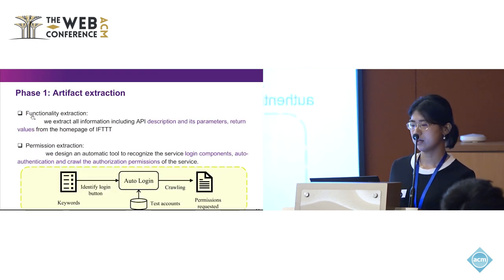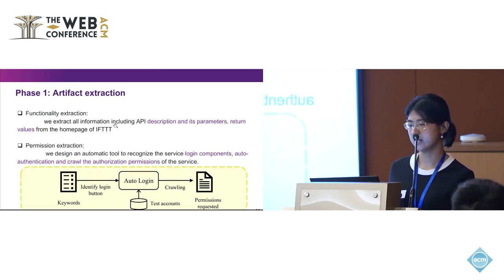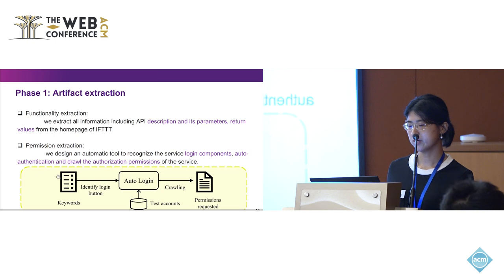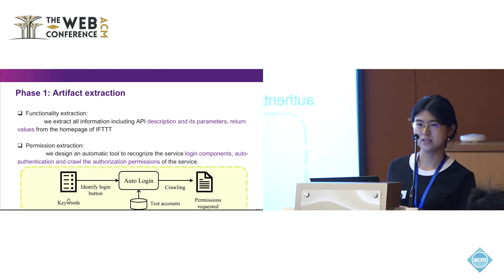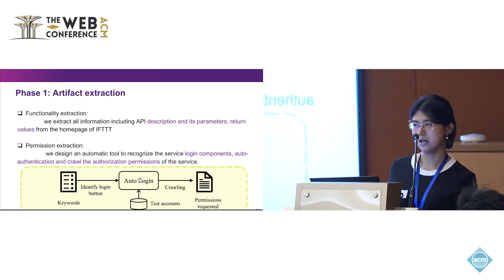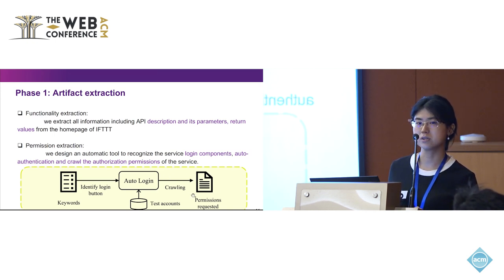In Phase 1, we extract functionality artifacts from the IFTTT homepage as provided by the TIE. For permission extraction, we need to automatically log into service providers. We create a list of test accounts for services like Gmail, OneDrive, and smart services. We use keywords like username and Gmail address to identify login fields, then automatically log in and capture the permission request after successful login.